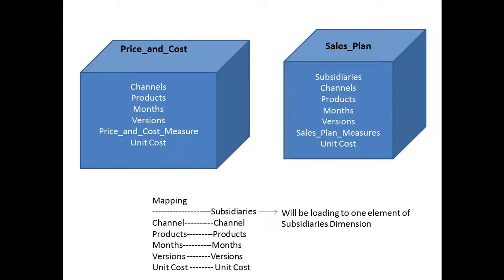Hello, this is Buwan again. Today I'm planning to show you how to move data from one cube to another — basically from a source cube to a target cube — and how to handle situations where the target cube has more dimensions than the source. I picked up a sample model that comes with TM1: price and cost as our source cube and sales plan as our target cube. Price and cost has five dimensions whereas sales plan has six. We are going to be moving unit cost information from the price and cost cube to the sales plan cube.